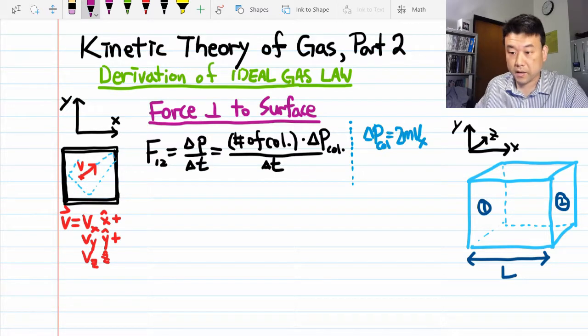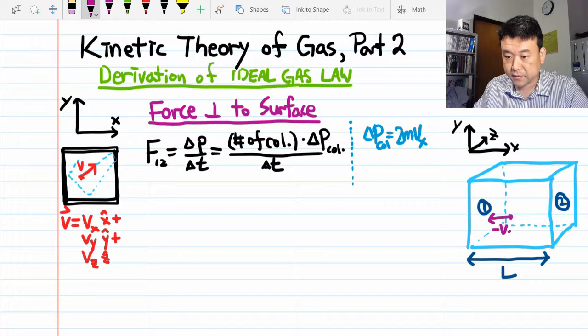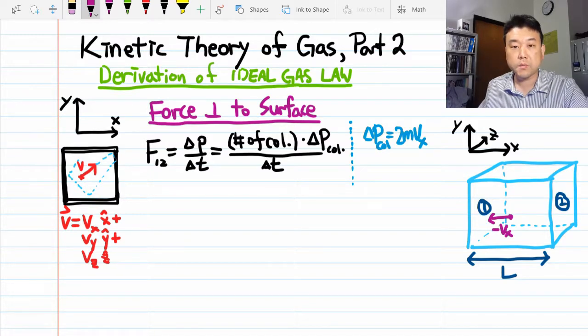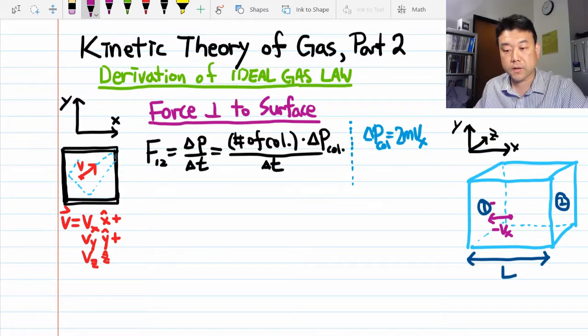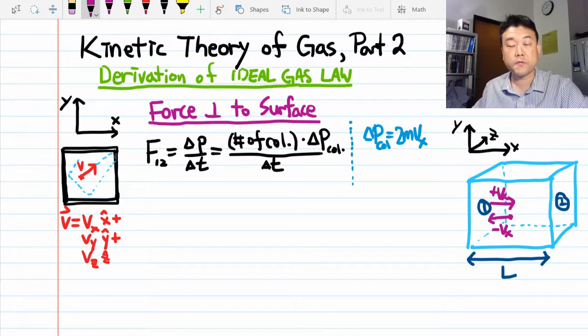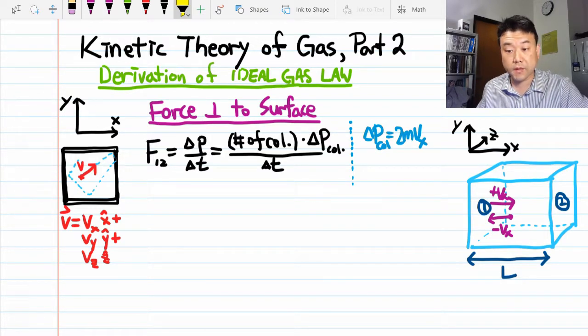The amount of momentum change per collision is going to be twice mass times the x component of velocity. Imagine a particle moving towards left with velocity minus Vx, so it has momentum minus MVx going in, and after bouncing from the wall, it comes out with plus Vx velocity or momentum plus MVx. So the change in momentum is the final momentum plus MVx minus the initial momentum minus MVx. You get 2MVx for the change of momentum per collision.